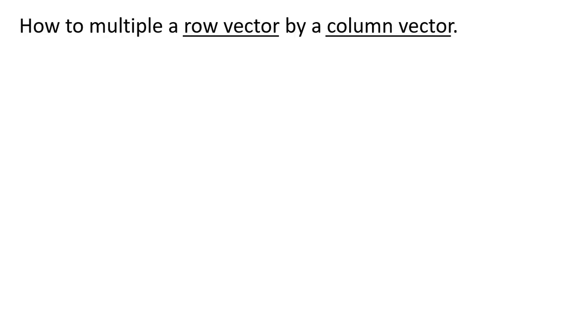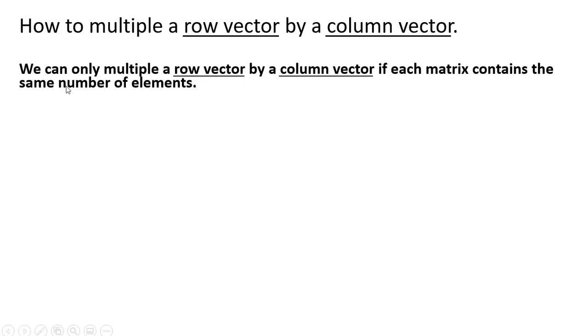So how to multiply a row vector by a column vector. We can only multiply a row vector by a column vector if each matrix contains the same number of elements or numbers.